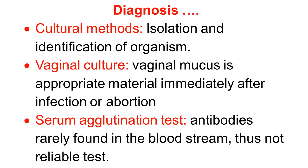A very important diagnostic material is vaginal culture. Vaginal mucus is the best material for diagnosis, collected immediately after infection or abortion. Vaginal culture is one of the most appropriate materials for confirmation. Serum agglutination test is not a reliable test because antibodies are rarely present in the bloodstream, so cultural methods — particularly vaginal culture — are the preferred methods for confirming diagnosis.